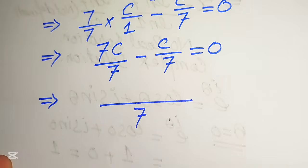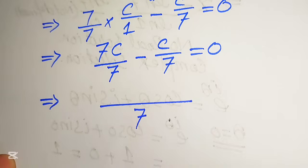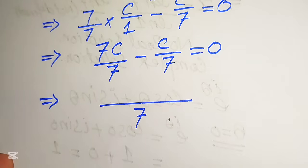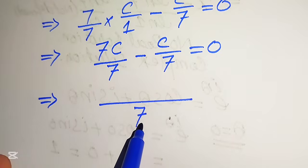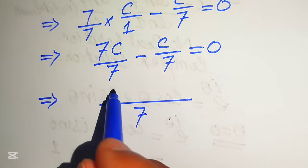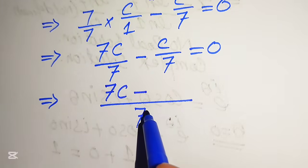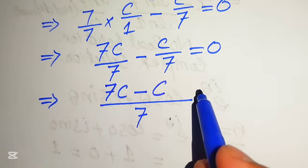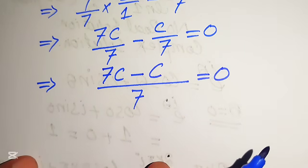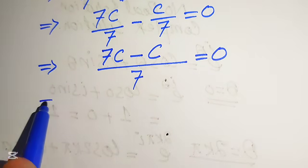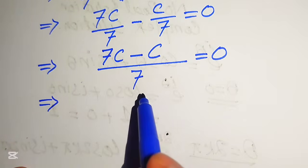I am doing all these steps in detail because some students can solve this directly, but others need each step shown explicitly. When you divide seven by seven you get one, and one times seven c equals seven c. The other seven divided by seven gives one, and one times c equals c. So we have seven c minus c over seven equals zero.